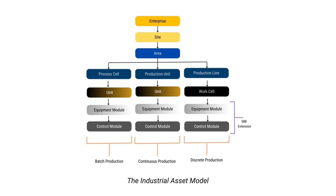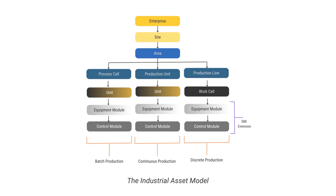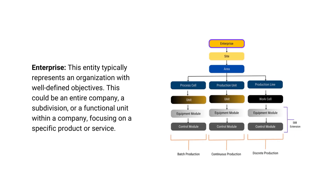The ISA-95 model represents a hierarchical structure of equipment entities, each having distinct organizational functions and relationships. Let us elaborate on these entities a bit further.